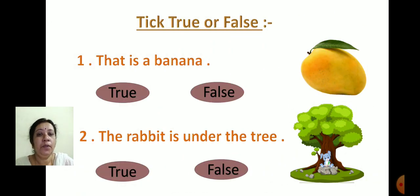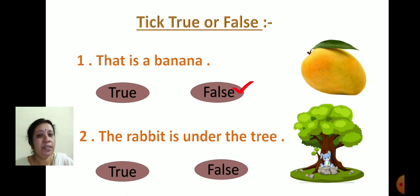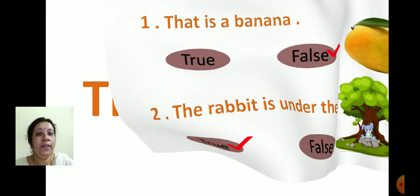Now in this slide, you are going to tick true or false. If the sentence is correct, tick true; if the sentence is wrong, tick false. First sentence: 'That is a banana.' Is it correct? No, so we tick false. Next: 'The rabbit is under the tree.' See the picture — yes, the sentence is correct, so we click true. Like this, practice at home. Goodbye and all the best. Thank you.